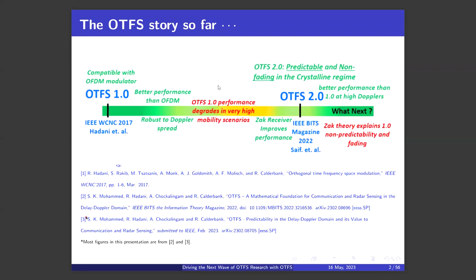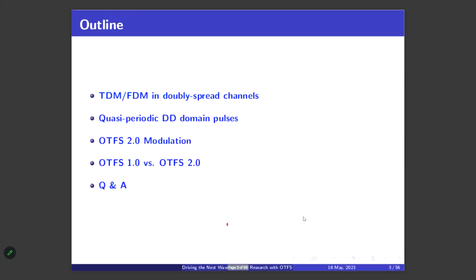We have to read together paper three — both of them are on the archive. Paper three is still under review. The outline is: I'll try to explain why the doubly spread channel is different from the normal linear time-invariant channels we are used to.